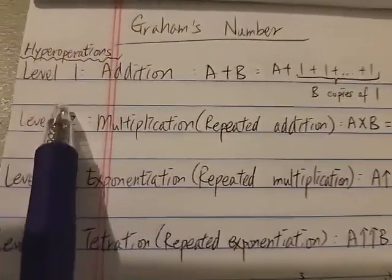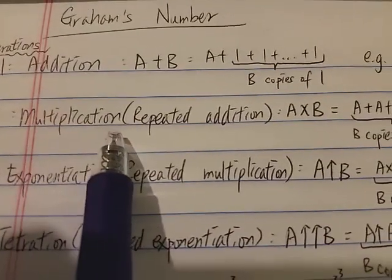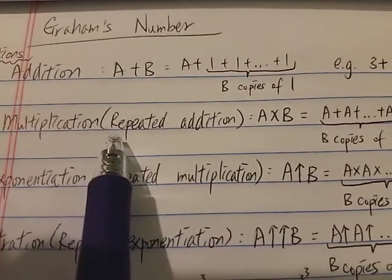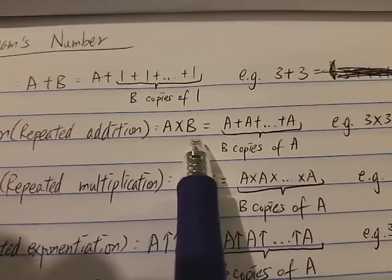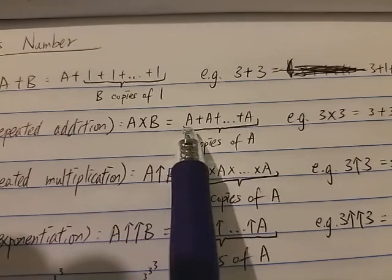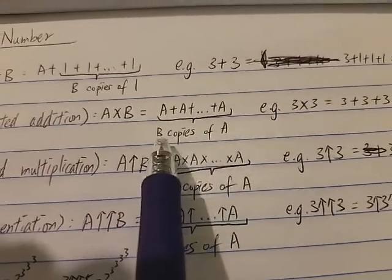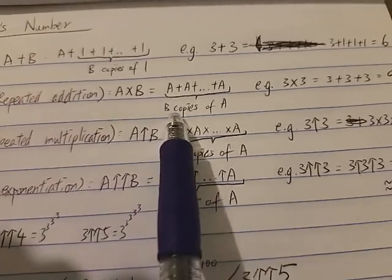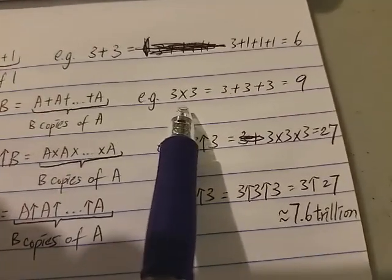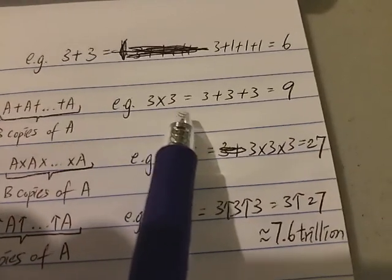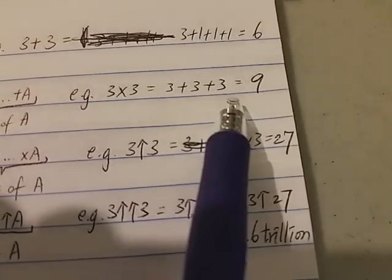On Level 2, we have multiplication, which is repeated addition. So A times B just means A plus A plus ... plus A, with B copies of A. For example, 3 times 3 equals 3 plus 3 plus 3, which is 9.